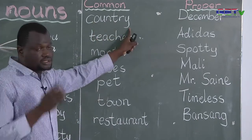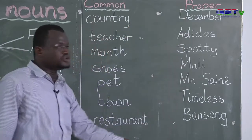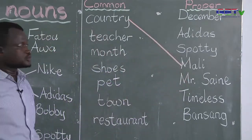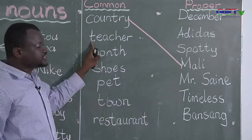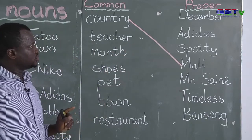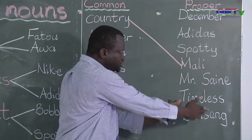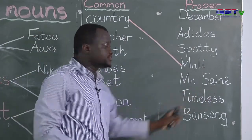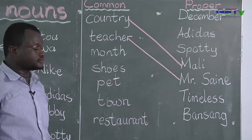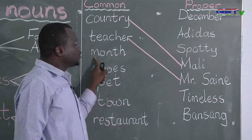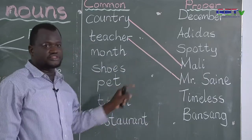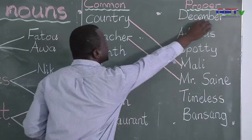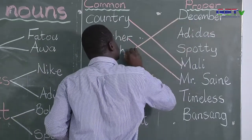Now we start the matching. Common name: country — the specific name of a country is Mali, so country matches Mali. The next common name is teacher — the specific name of a person on the other list is Mr. Sen, so teacher matches Mr. Sen. Next common name: month — the specific name of a month is December, so month matches December.